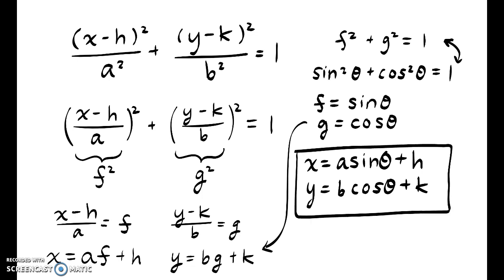This is our general expression for parametric equations for an ellipse. When it's a vertical ellipse — meaning its foci are parallel to the y-axis rather than to the x-axis — then all we do is switch a and b and repeat the same process.